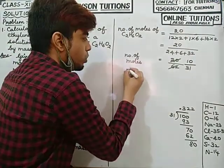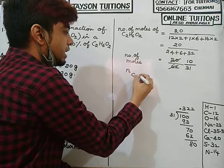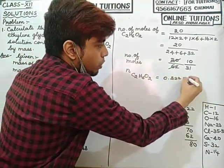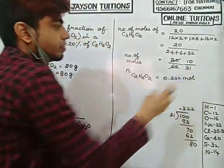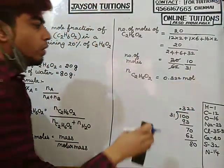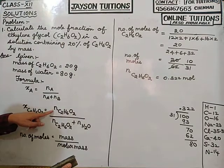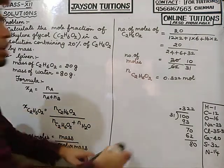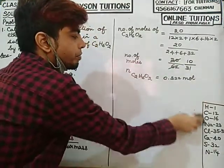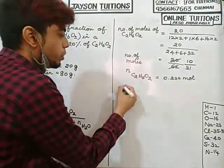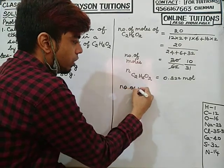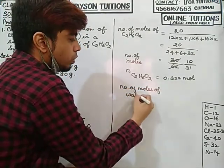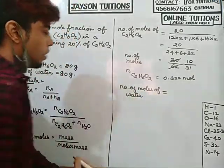So the number of moles of ethylene glycol is 0.322 moles. Next, I have to find the number of moles of water. Number of moles of water equals mass divided by molar mass. The mass of water given is 80 grams.